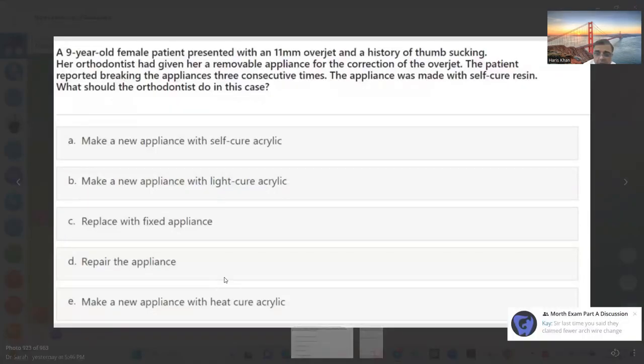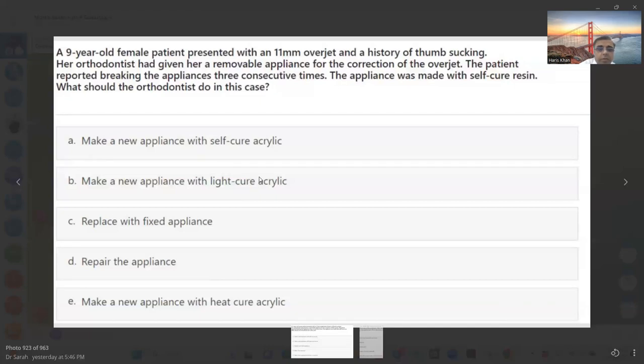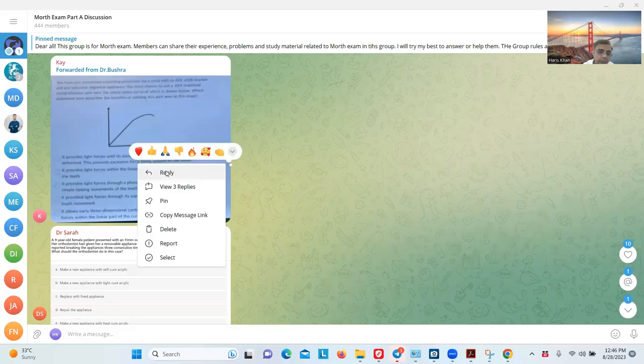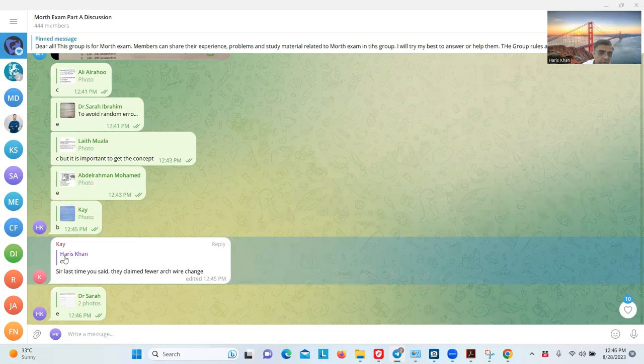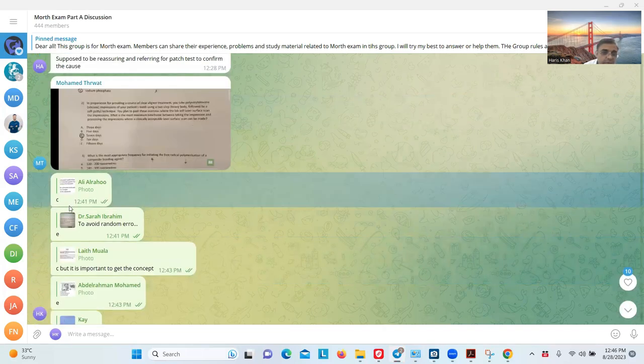Now we'll talk to the point of what I explained. An 11mm overjet with history of thumb sucking. Her orthodontist gave her a removable appliance for the reduction of overjet. The patient reported breaking the appliance three consecutive times. The appliance was made of self-cure acrylic. What would you do? Three times broken—make a new appliance with heat cure.